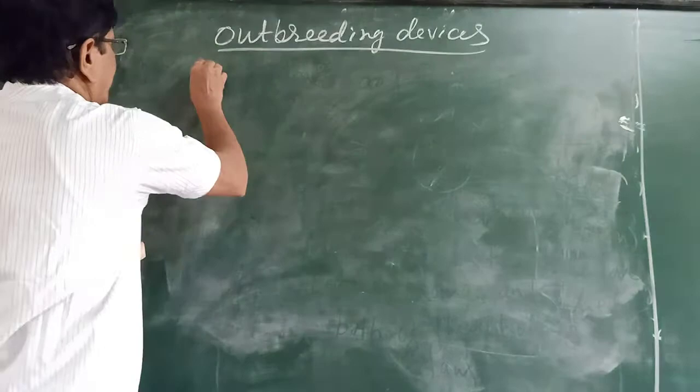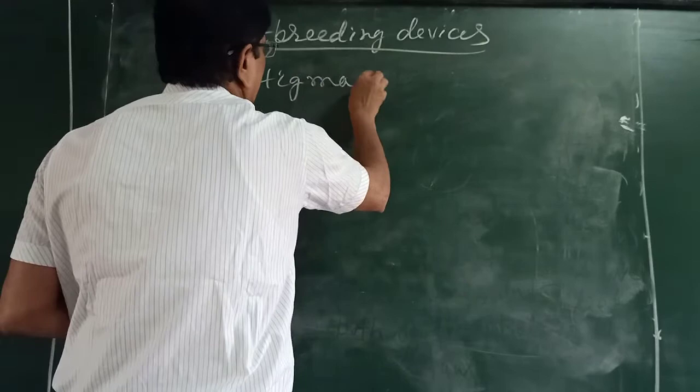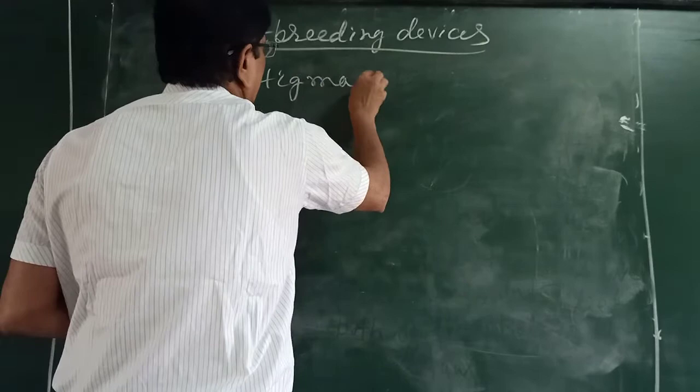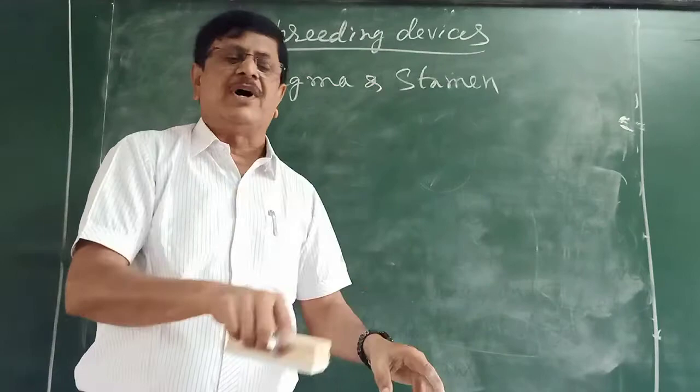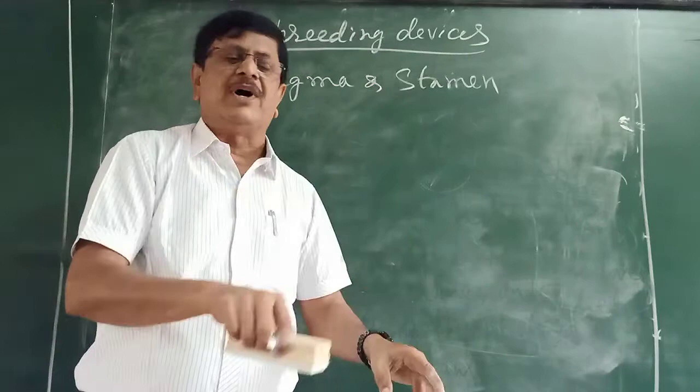What are the outbreeding devices? First: stigma maturation and stamen maturation. Stamen and stigma do not mature at the same time. The stigma and stamen maturation is not synchronized — synchronized meaning uniform or at the same time. They are not mature at the same time.